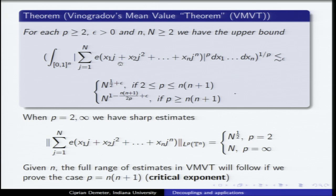There are two different regimes. There is a critical exponent; something happens between 2 and the critical exponent. You recognize one quantity as being the L2 norm of this expression — so this is another reverse Hölder. Then for p greater than the critical exponent, there are some losses which should be there. The estimate is fairly trivial at p equals 2 and p equals infinity. If you can prove it for the critical exponent, then Hölder gives you the whole theorem.